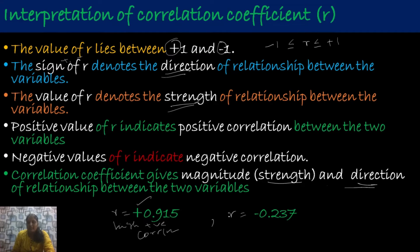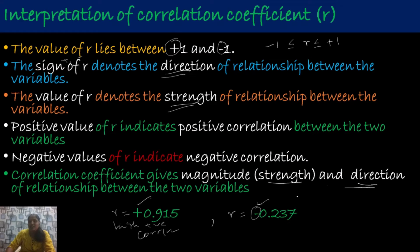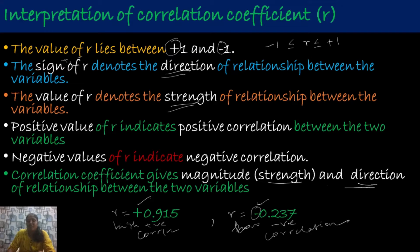Now, if R takes the value minus 0.237 — look at the sign, that is negative, so there exists a negative correlation. The magnitude is 0.237, approximately 0.2, which falls in the low negative range. So our conclusion is: there exists a low negative correlation between the two variables. If there exists low negative correlation, then the relationship between the two variables is weaker.